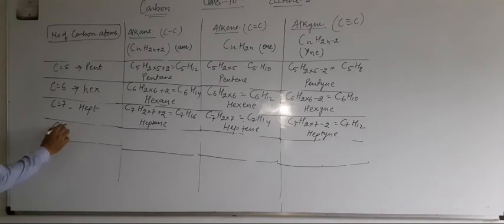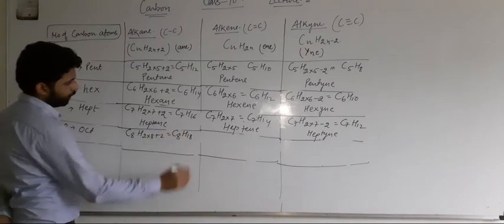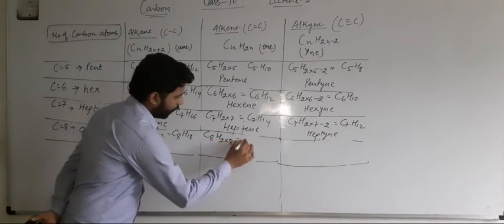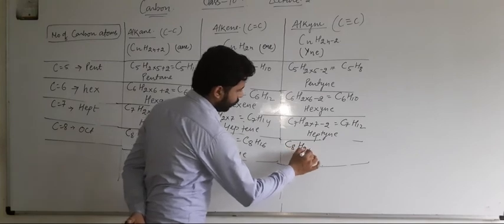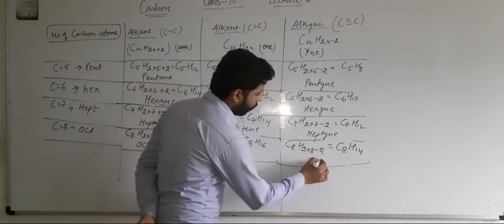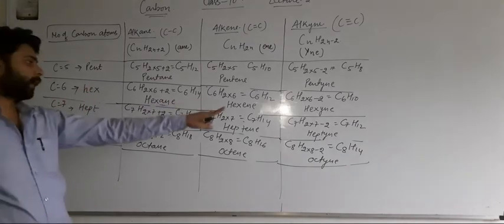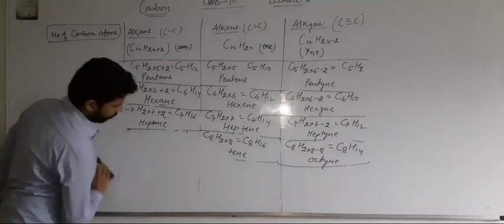For eight carbons, octane is C8H2 into 8 plus 2, which gives C8H18. Octene is C8H16. And octyne is C8H2 into 8 minus 2, which is C8H14.